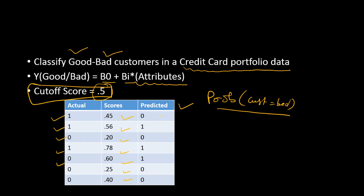Based on this criteria, we get the predicted value. For instance, if a score is 0.5, the predicted value is zero even if the actual value is one — that is a mismatch. We apply the same rule to categorize the entire dataset into ones and zeros. We do this on the test data or holdout sample to see how accurate the model's predictions are.